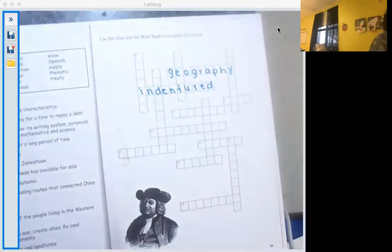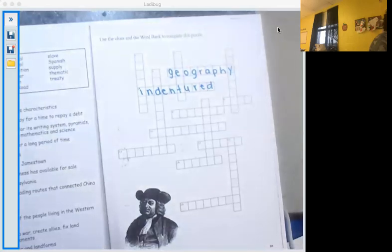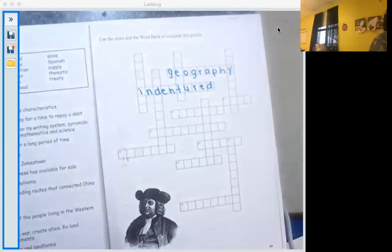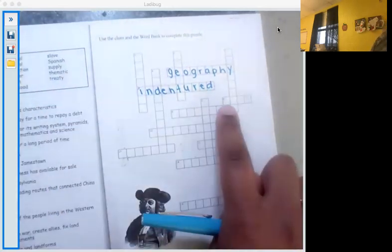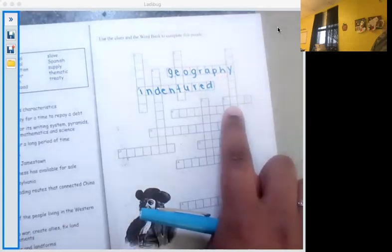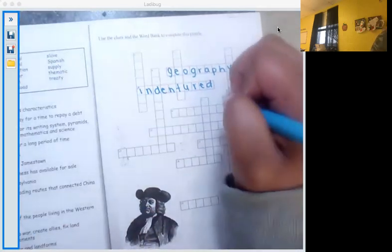All right. Number eight. Ancient Mesoamerican culture known for its writing system, pyramids, farming techniques, and knowledge of mathematics and science. So let's look. Where are we? Eight across. So let's see here. I believe that is the Maya.